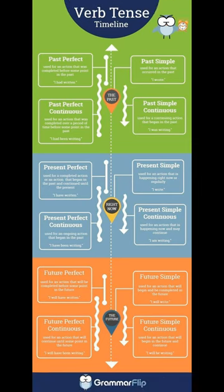Verb tense timeline. Here's a useful infographic showcasing the different verb tenses in the English language. The past tenses: past perfect, used for an action that was completed before some point in the past — for example, 'I had written a book.' Past simple, used for an action that occurred in the past — for example, 'I wrote a book.' Past perfect continuous, used for an action that was completed over a period of time before some point in the past — for example, 'I had been writing a book.'